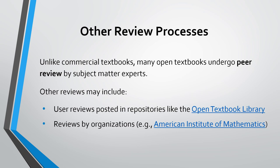Other review processes: unlike commercial textbooks, many open textbooks undergo peer review by subject matter experts. Other review processes may include user reviews posted in repositories like the Open Textbook Library — these are often written by faculty who have used the text, but sometimes students too — and reviews by organizations like the American Institute of Mathematics.